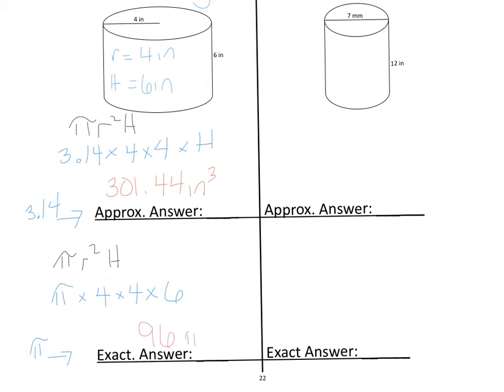Then we put pi on our answer, and our units are cubed. So what this means is 96 times pi is going to give you the most exact answer, and because we have to round pi since we can't write all of the decimal points, that's why it's considered the exact answer and not the approximate.